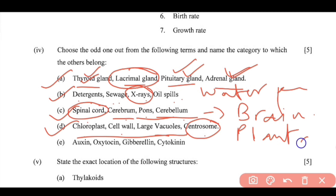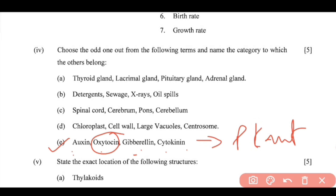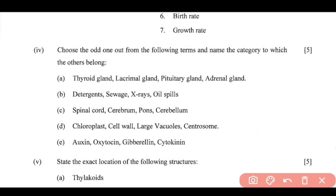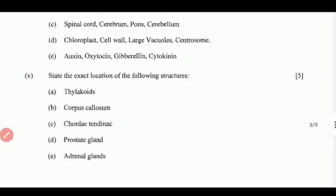(D) Chloroplast, cell wall, large vacuoles, centrosome — centrosome is the odd one out; the rest belong to the category of plant cell. (E) Auxin, gibberellin, cytokinin, oxytocin — oxytocin is the odd one out; the other three are plant hormones. This completes Question 4.